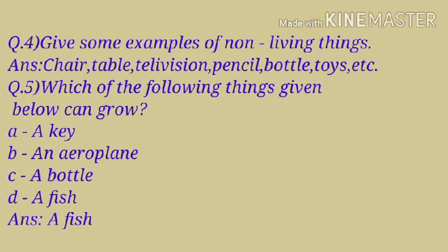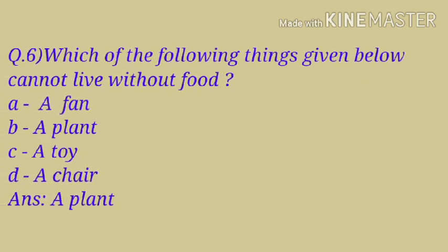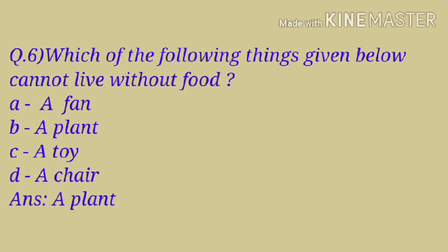Question number five: Which of the following things can grow? Option A: a key, Option B: an airplane, Option C: a bottle, Option D: a fish. Answer: A fish. Question number six: Which of the following things cannot live without food? Option A: a fan, Option B: a plant, Option C: a toy, Option D: a chair. Answer: A plant.